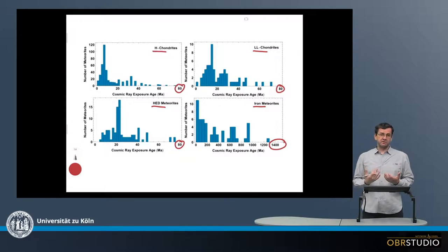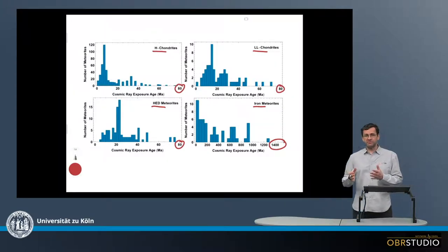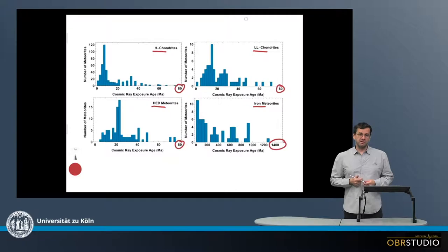The iron meteorites can have much older cosmic ray exposure ages than the stone meteorites. This is usually interpreted as there being space weathering: the cosmic rays, the solar wind, and collisions among smaller particles.